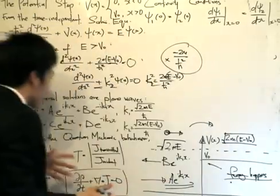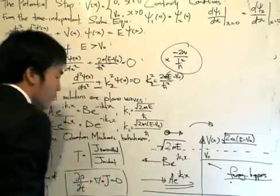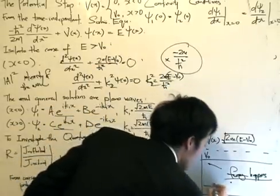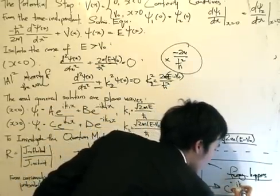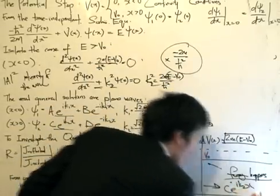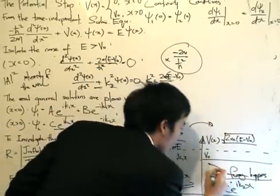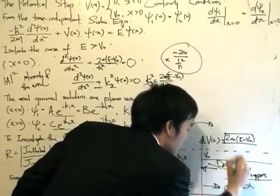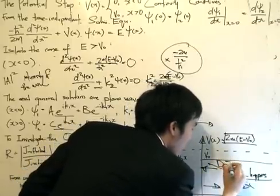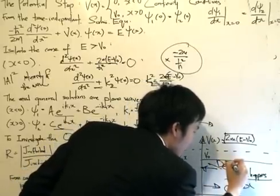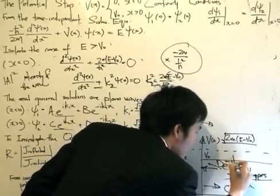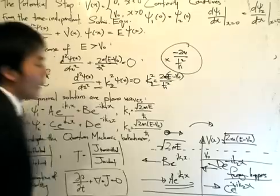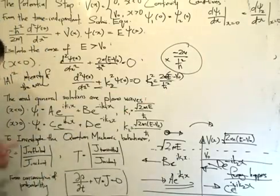And in this region, C·e^(iK2X) represents the wave moving from left to right, and from right to left it's D·e^(-iK2X). The minus sign again indicates moving from right to left.